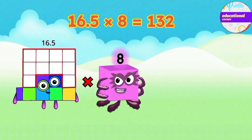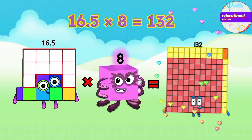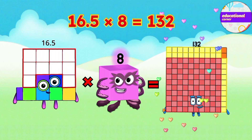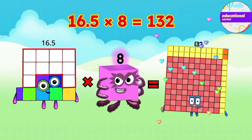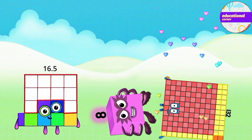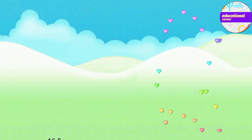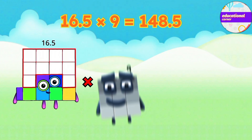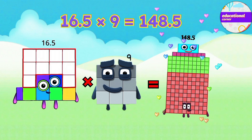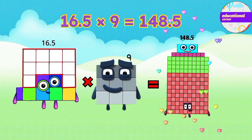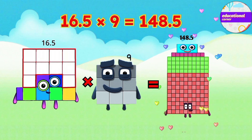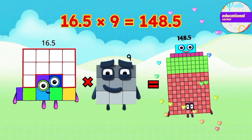16.5 multiplied by 8 equals 132. 16.5 multiplied by 9 equals 148.5.